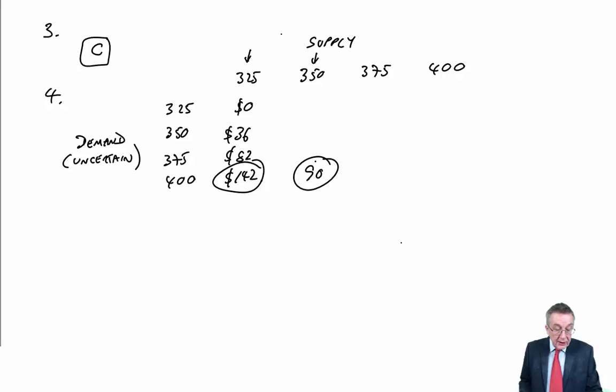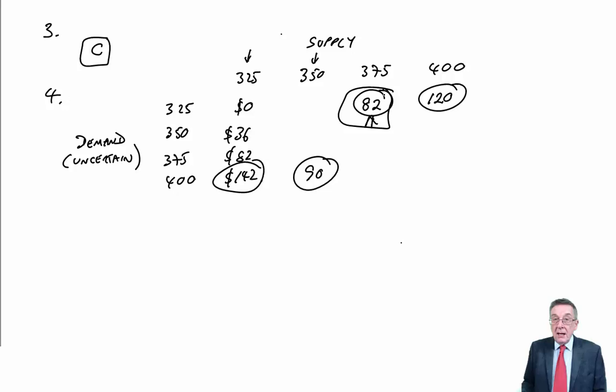Finally, if it's 400 a day, 120, 78, the worst is regret of 120. To choose between those four, the minimum of the maximum, what's the best of the worst? The best is the smallest, the minimax, it's 82. Which course of action is that? 375. We'll supply 375 a day, the answer is C.